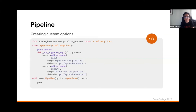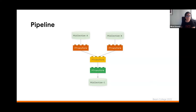You can set your pipeline configuration options programmatically, but the most common thing is to set the options ahead of time, reading them from the command line and passing them to the pipeline when it is created. You can also add your own custom options in addition to the standard ones. For instance, imagine you are reading data from a Pub/Sub topic — you could pass the name of the topic as an input parameter. You can also specify a description for the parameters, which will be shown when you invoke the pipeline with the --help option, and you can specify default values for those custom options.